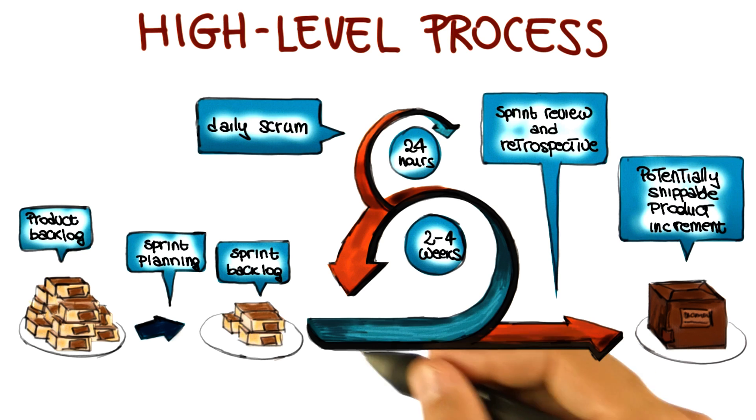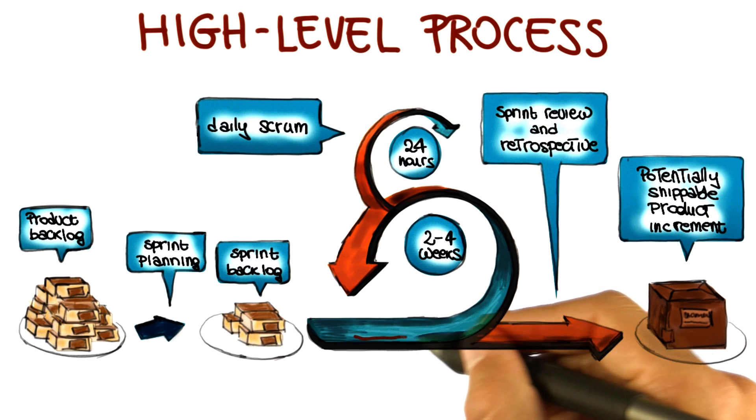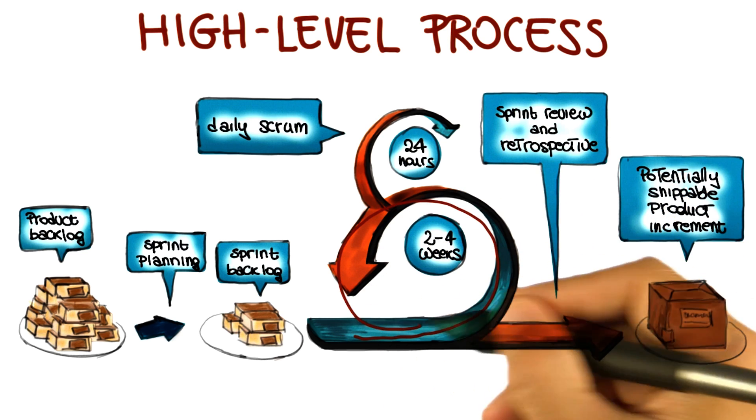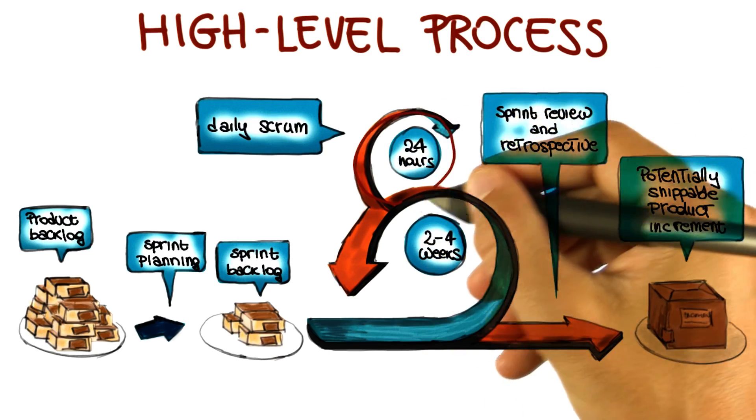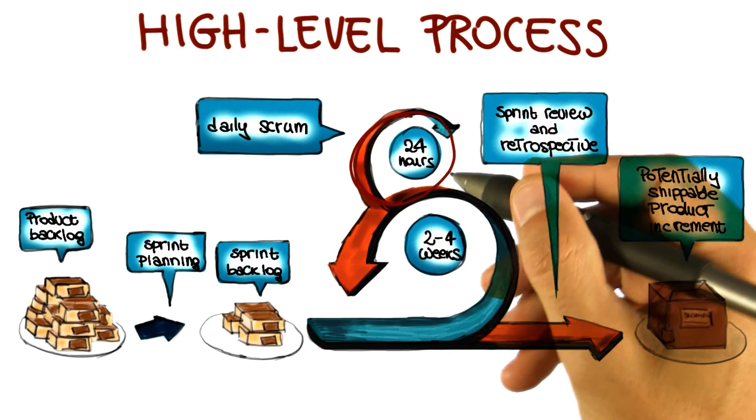The sprint is an actual iteration of the Scrum process. It's got the main part that lasts two to four weeks. And within this main part, there are many daily scrums that last 24 hours. So let's see how this works.